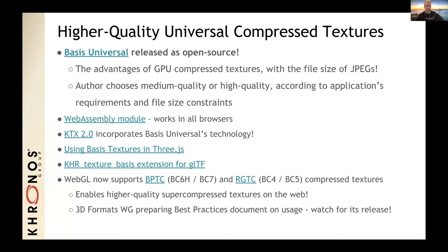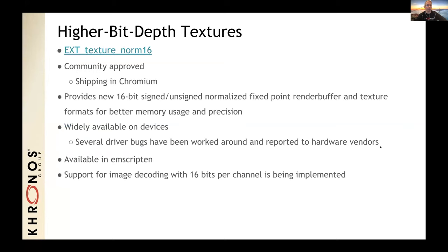There are links describing how to use Basis Universal in Three.js and glTF. WebGL now supports BPTC and RGTC compressed texture formats, enabling higher quality super-compressed textures on the web. The Khronos 3D Formats Working Group is preparing a best practices document on their usage — watch for its release on the WebGL dev list. The EXT_texture_norm16 extension offers higher bit-depth textures, already shipping in Chromium. It provides new 16-bit per channel signed and unsigned normalized fixed-point render buffer and texture formats, compared to 16-bit floating point textures which have more range but less precision.